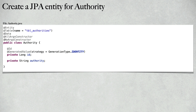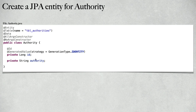To configure authorities, we are going to create a new JPA entity called Authority. It contains two properties: ID and the authority name itself. Authorities in our case are read authority, write authority, update authority, or delete authority. We are going to add the annotations: @Entity, @Table, @Data, @AllArgsConstructor, and @NoArgsConstructor.